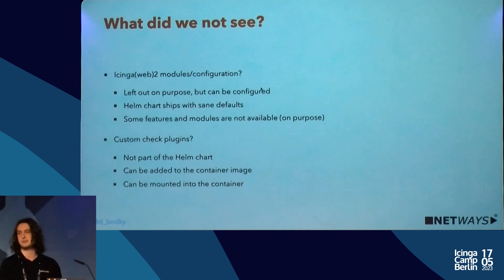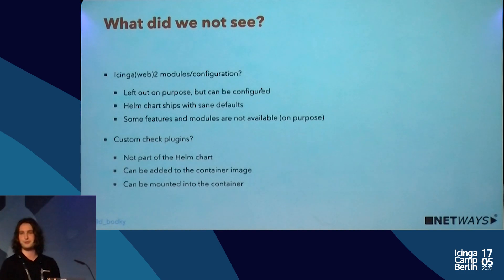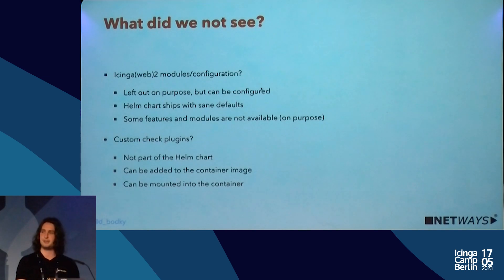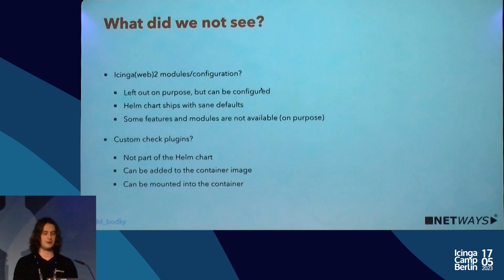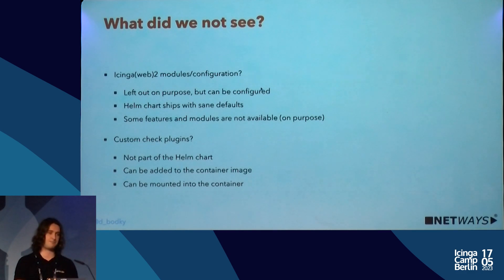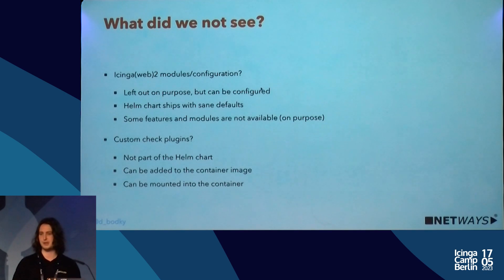What we didn't see: many Icinga Web modules — they are there, I just left them out to keep the demo simpler. The Helm chart ships with sane defaults so for most features and modules in Icinga Web, setting 'enabled: true' is enough. Except for some features deliberately left out because they're not a good fit for Kubernetes — more on that in the documentation. We also didn't see custom check plugins, which are a bit tricky: you'd have to build your own container images containing the plugins, or mount them into containers at deploy time — support for that is already in the Helm chart.